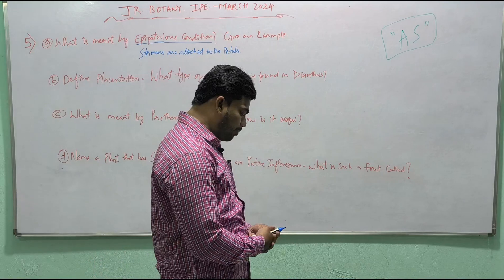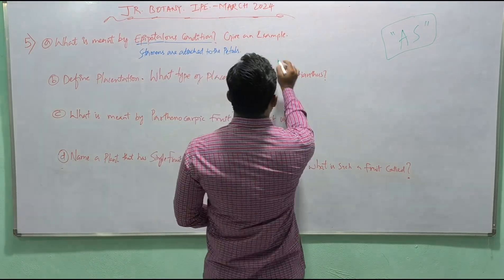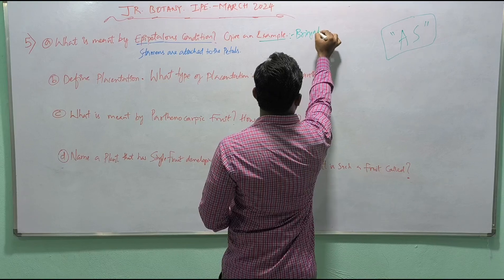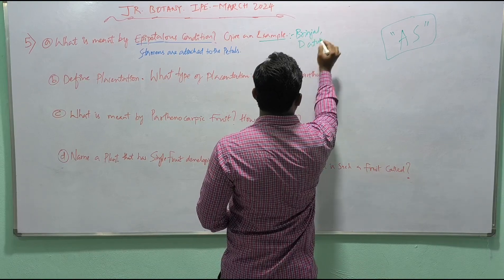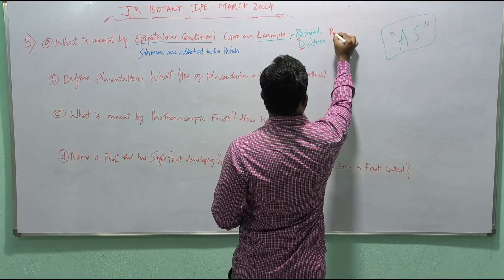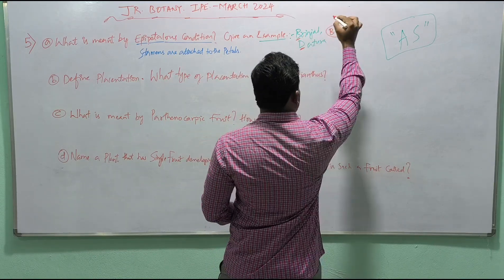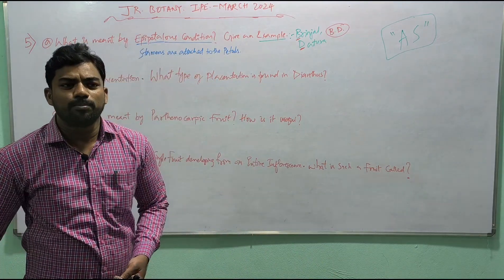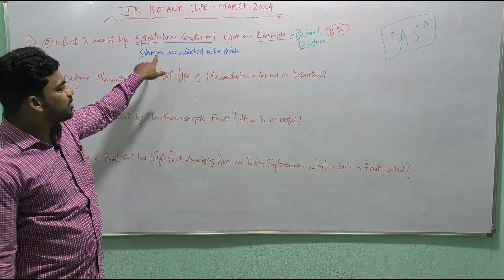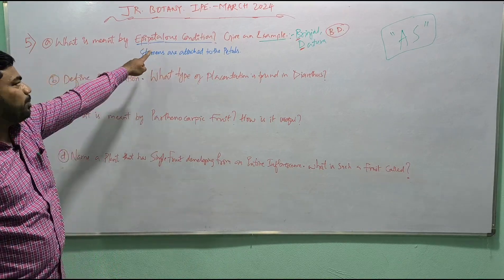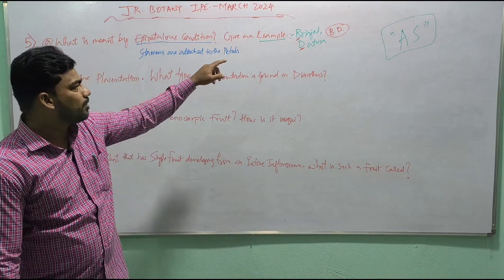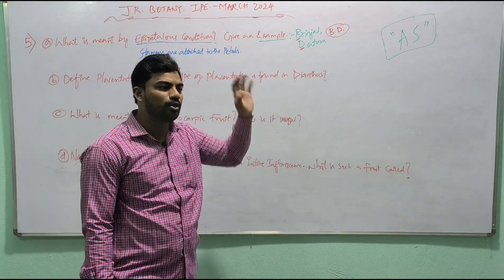Give an example — brinjal. Epipetalous condition means stamens are attached to the petals. Example: brinjal. That is your answer.